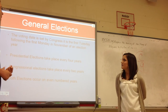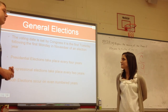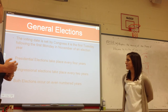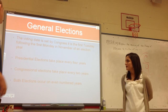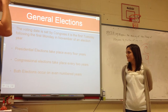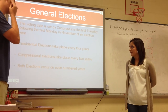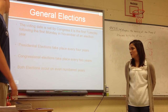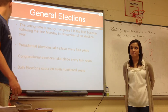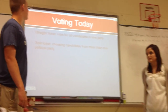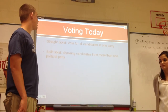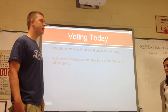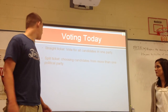General elections. Voting day is set by Congress on the first Tuesday following the first Monday in November of an election year. Presidential elections take place every four years, and congressional elections take place every two years, with both elections occurring in even-numbered years. Voters may cast a straight ticket, which is a vote for all candidates in one party, or a split ticket, choosing candidates from more than one political party.